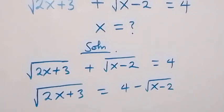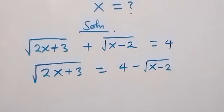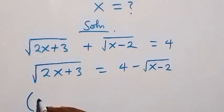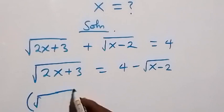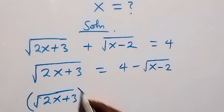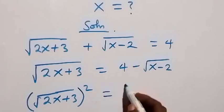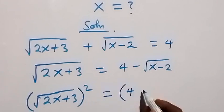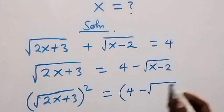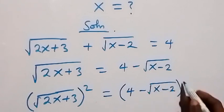Then from here, let's square both sides. This will give us: the quantity (root of 2x plus 3) squared equals the quantity (4 minus root of x minus 2) squared.